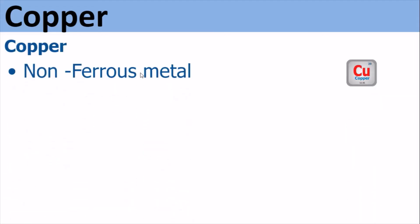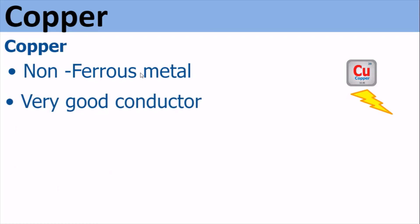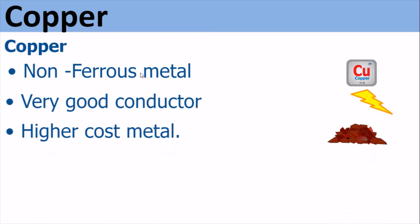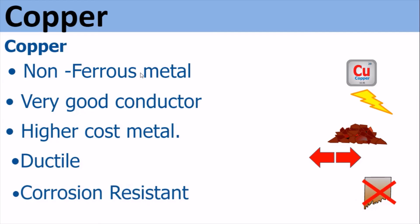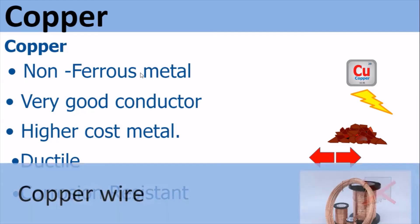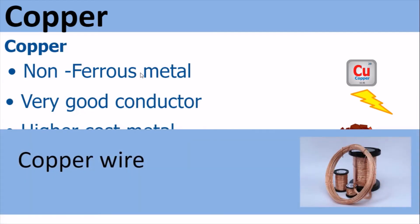Copper. Copper is a non-ferrous metal. It is a very good conductor and a higher cost metal. It is ductile, so it can be pulled into wire. It is corrosion resistant, and it is used for copper wire and electrical products.